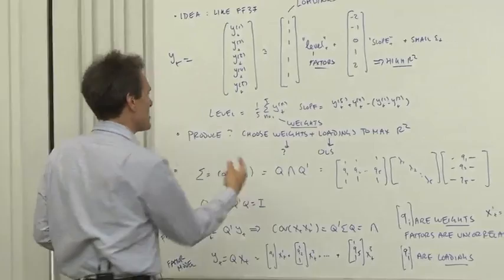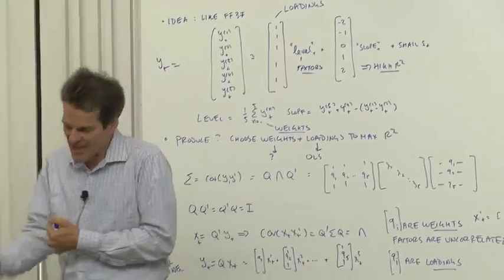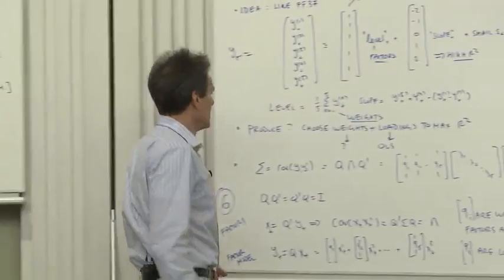Of course, given the factors, the loadings is easy. It's ordinary least-squared regression. That maximizes R-squared. But the key question is, how do you calculate the weights? How do you form the factors in a way such that in the second step, the R-squared is as high as possible? Here's the answer.